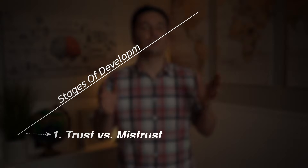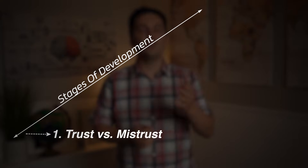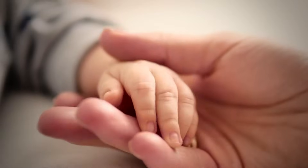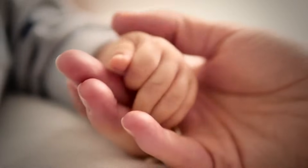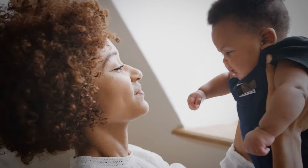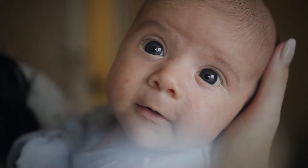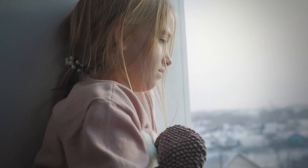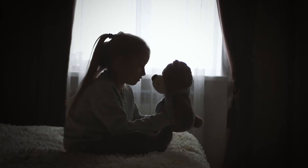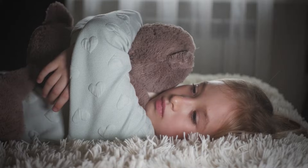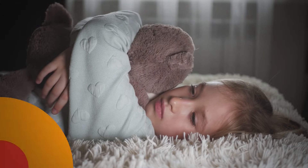The first stage is trust versus mistrust, which generally occurs during the first year of life. An infant is learning to trust the world. In order for the infant to develop trust, the infant needs to be shown affection and feel safe and secure. All of this helps the infant develop a secure attachment. If a person does not receive these things in this stage, it may lead to an insecure attachment and cause the infant to mistrust their surroundings.